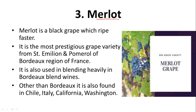Next is Merlot — the correct pronunciation is Merlot, not Merlot. It is a black grape variety that ripens faster. It is the most prestigious grape variety from Saint-Émilion and Pomerol — sub-regions of Bordeaux, France — producing very expensive wines like Château Pétrus. It is also heavily used in blending in Bordeaux blend wines. Outside Bordeaux, it is also found in Chile, Italy, California, and Washington. Merlot has a lot of sugar, which produces a lot of alcohol, so Merlot wines are usually more alcoholic.